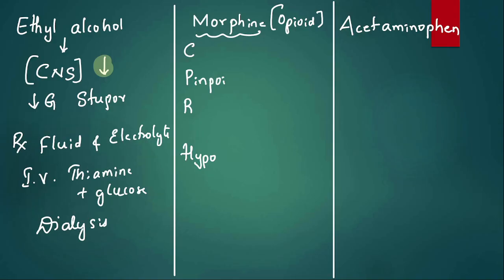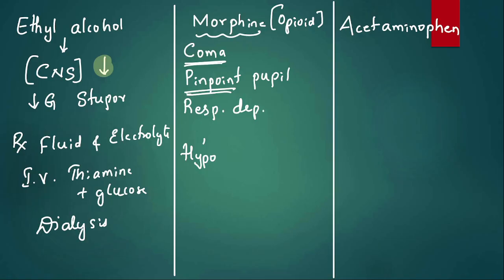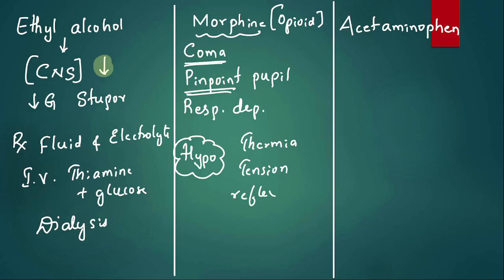Let me summarize morphine poisoning: CPR — C for coma, P for pinpoint pupils, R for respiratory depression. There are also three 'hypos' in opioid poisoning: hypothermia, hypotension, and hyporeflexia. The antidote for opioid poisoning is naloxone. So we have ruled out ethyl alcohol and morphine.